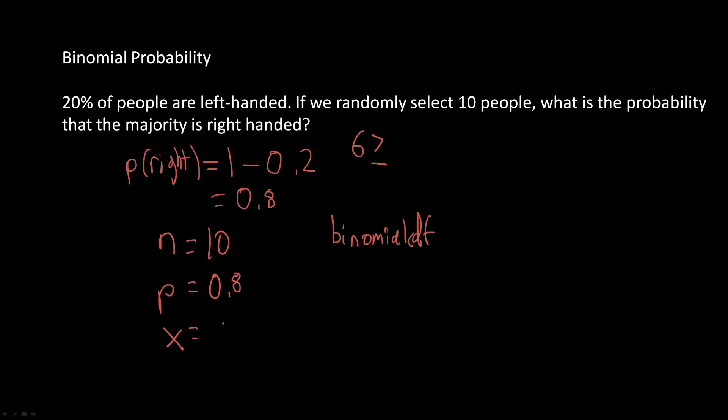It would encompass the probability that 5, 4 out of 10 people, 3 out of 10 people, and 2 out of 10 people are right-handed, which is not necessarily what we want because that's less than 6, which is minority or equal to half.